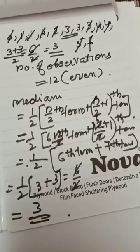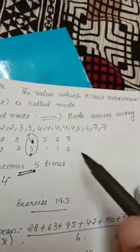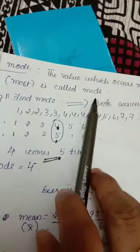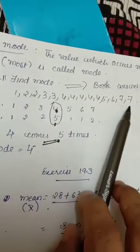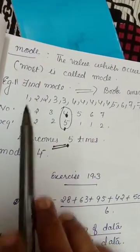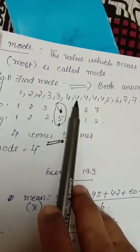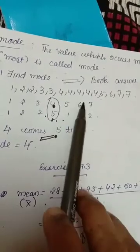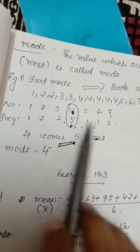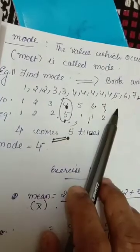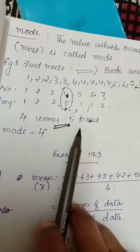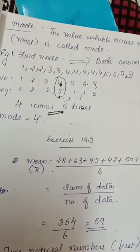Now we will find the mode. Mode means the value which occurs the maximum number of times. From the data arranged in ascending order: one appears once, two appears twice, three appears twice, four appears five times, five appears once, six appears once, seven appears twice. Four appears more than any other number, so four is the mode of the data.